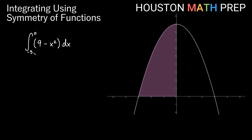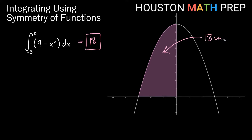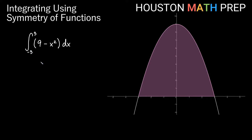Now consider the definite integral from negative 3 to 0 of the same function. If we're certain this area is symmetric with the area from 0 to 3 — the y-axis cuts this in half — then the integral from negative 3 to 0 also equals 18 square units. For an even function like this, which has fold symmetry across the y-axis, the integral from negative 3 to 3 would be double 18, giving 36 square units of area.